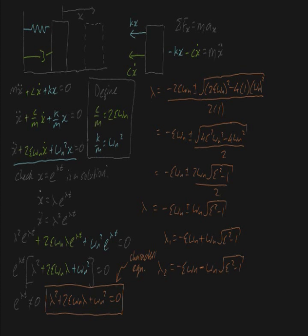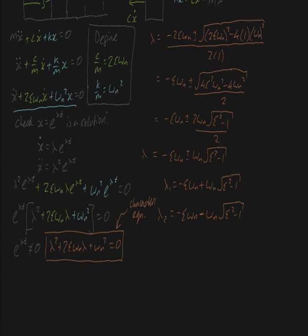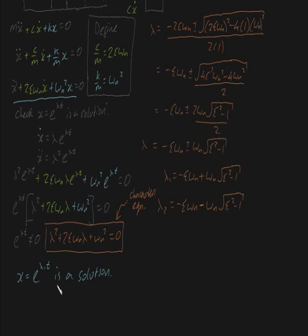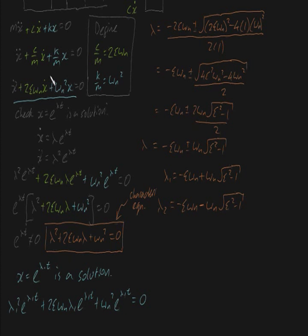So now what we've essentially shown is that x equals e to the lambda 1 t is a solution. To really hammer down this point, let me write down what this actually means. It means that if I were to substitute x equals e to the lambda 1 t into this equation, we would get zero. That just means that lambda 1 squared e to the lambda 1 t, plus 2 zeta omega n times lambda 1 e to the lambda 1 t, plus omega n squared e to the lambda 1 t is going to be equal to zero.